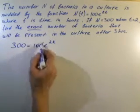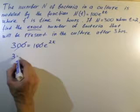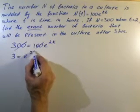We can cancel out zeros. We're going to be left with 3 equals e to the power of 2k.